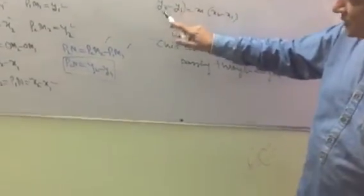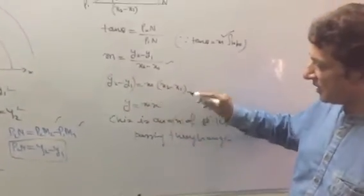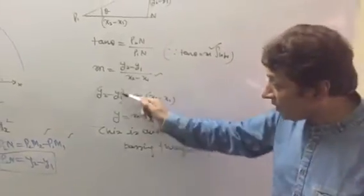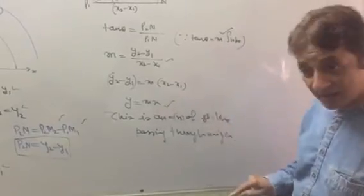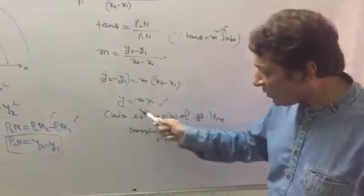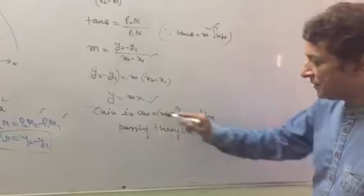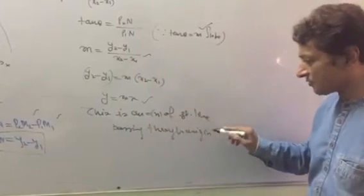When we do the cross multiplication, y2 minus y1 equals m times (x2 minus x1). What is y2 minus y1? That is y. What is x2 minus x1? That is x. So y equals mx. This is an equation of a straight line passing through origin.